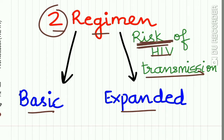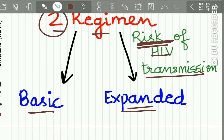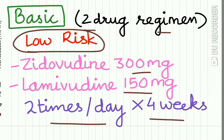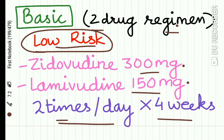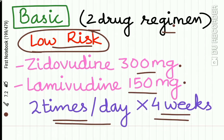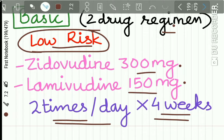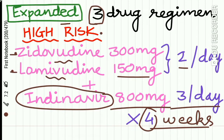The National AIDS Control Organization has recommended two regimens for PEP, depending on the risk of HIV infection: the basic regimen and the expanded regimen. The basic regimen is a two-drug regimen used in low-risk patients. It includes Zidovudine 300 mg and Lamivudine 150 mg, both taken twice a day for a duration of four weeks.